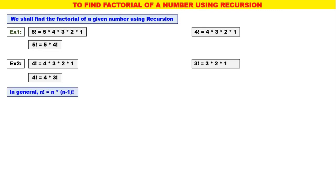Now, in general, n factorial is equal to n into n minus 1 factorial. Very important: n factorial is equal to n into n minus 1 factorial. Also, we know 0 factorial is equal to 1 — that is, factorial of 0 is 1.